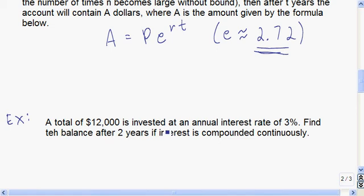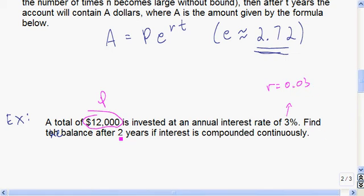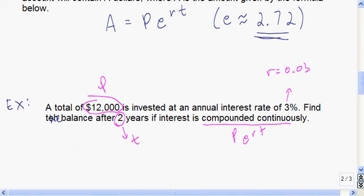Let's do an example. A total of twelve thousand dollars is invested at an annual interest rate of three percent. Find the balance after two years if interest is compounded continuously. We use the formula A equals Pe to the RT. So P is twelve thousand, R is 0.03, and T is two. A equals 12,000 times e to the power of 0.03 times two.